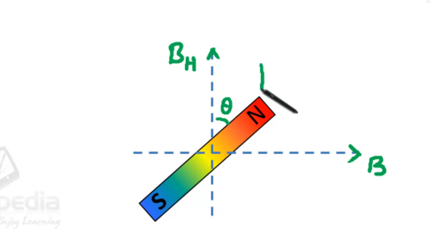This side, the force on the north pole will be M into BH, where M is the pole strength. This side, the force due to the bar magnet magnetic field B will be equal to M into B.